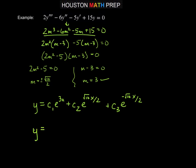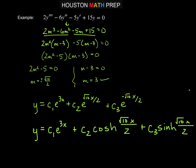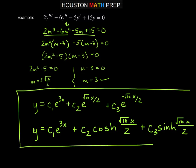so it is possible that we may see the hyperbolic functions as a solution here. So c1 e to the 3x, we got plus and minus the same thing, so we might say c2 cosh root 10x over 2 plus c3 sinh root 10x over 2. So either of those would be a decent answer there.